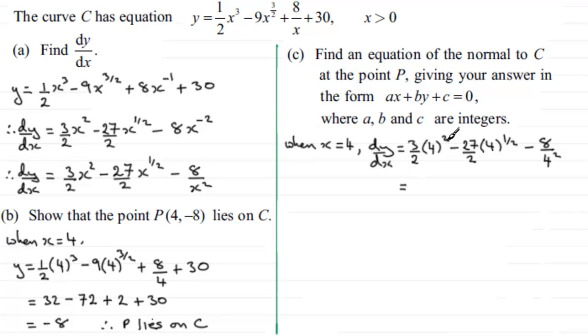4² is 16, half of 16 is 8, 8 threes are 24. 4^(1/2) is 2, divided by 2 is 1, times -27 gives -27. 8 divided by 16 is 1/2, so -1/2. This comes to -3.5, or -7/2. That's the gradient of the tangent at point P.